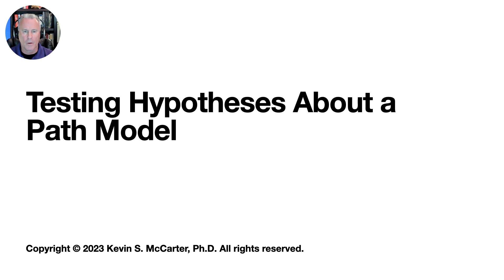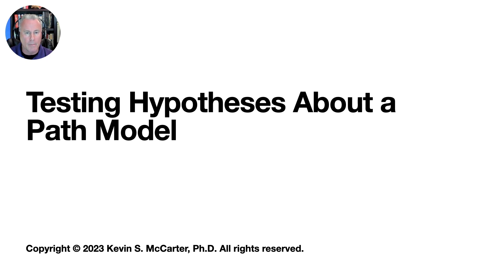In this lecture video, we continue our analysis and development of the PATH model that we began looking at in the previous video. In that video, we did an initial fitting of the model. The question now is, can that model be simplified, and if so, in what ways? Our goal will be to determine whether the PATH model can be simplified without significantly compromising or degrading its explanatory or predictive ability.